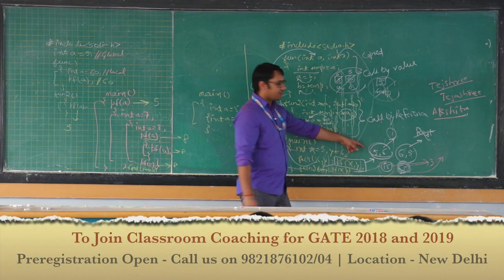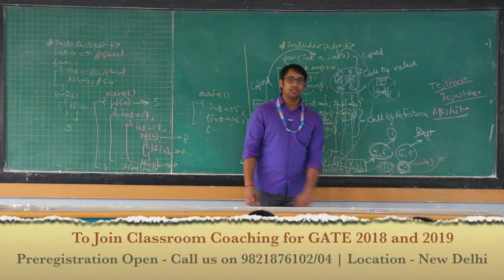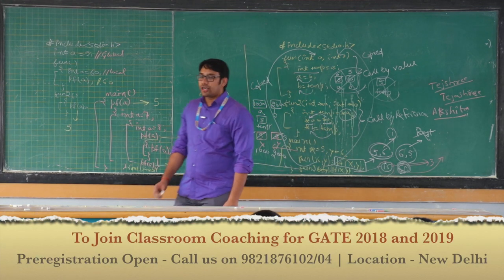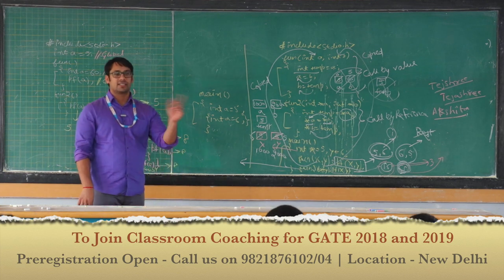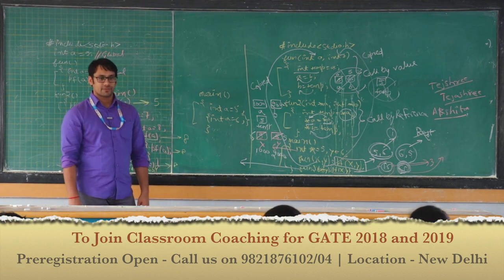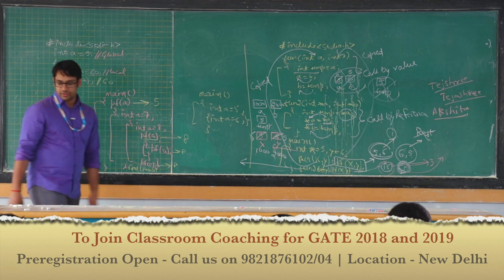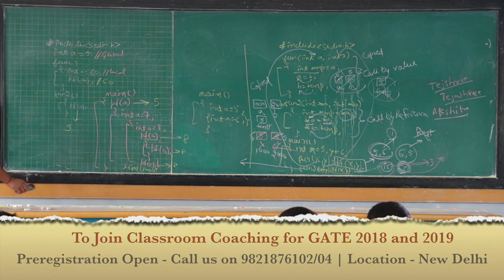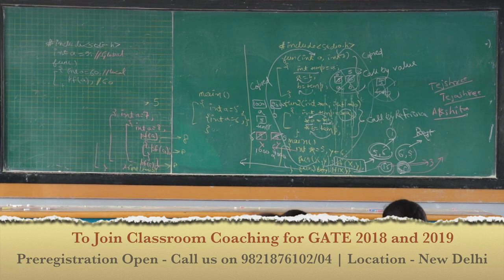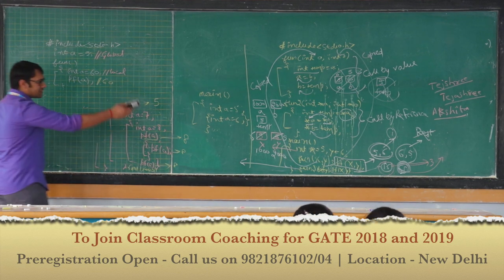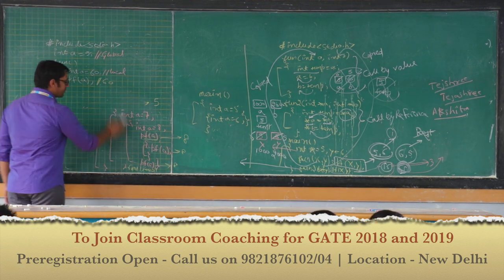So in the first case it will print 5, 6 and in the second case it will print 6 and 5. It is called call by reference because we are passing the addresses, and addresses are generally referred to as references. In GATE, they ask questions on call by value and call by reference at least five times — it is a very simple question, absolutely free marks.